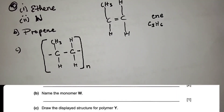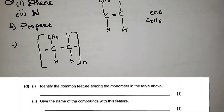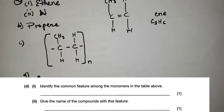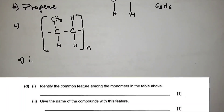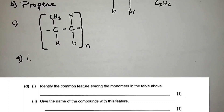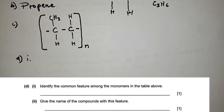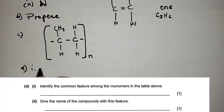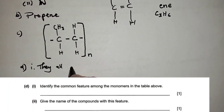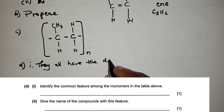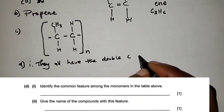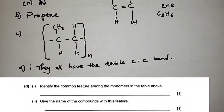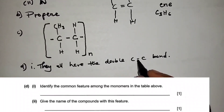Let's go to question d, still under organic chemistry. D1: identify the common feature among the monomers in the table. The common feature is that they all have a carbon-to-carbon double bond.